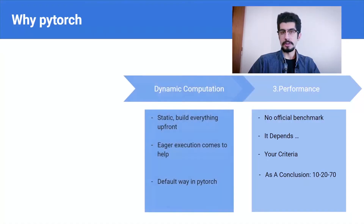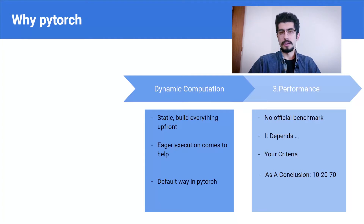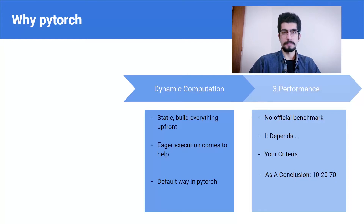The second reason why you should learn PyTorch is dynamic graph computation. It's really easy to understand dynamic versus static computation by comparing how TensorFlow and PyTorch work. Starting with TensorFlow 1, you have to build all of your architecture upfront — you can't see one step further from the input. You have to compile all of your graph first and then run it. Here is a piece of code in TensorFlow 1.14.